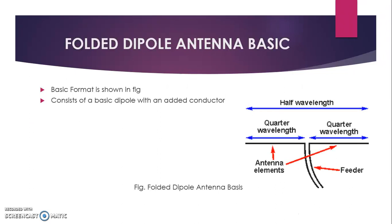This is the folded dipole antenna basis. The basic format is shown in the figure — you can see that it is the half wavelength. If we divide it into two, then it is a quarter wavelength on each side. It consists of the basic dipole with an added conductor. You can see here the antenna elements and the feeder.